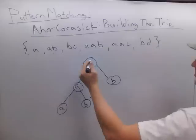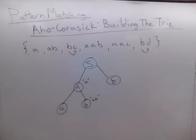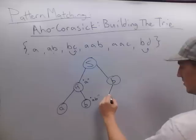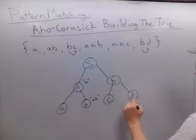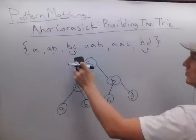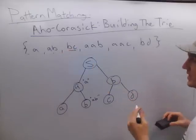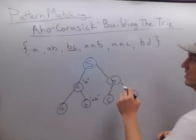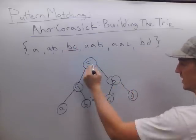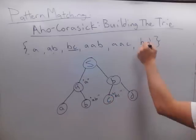I'm going to do the same with B. B can be followed by C or it can be followed by D, so I'm going to add those children. I have to set the special output characteristic for each of these. BC terminates an entire word from the dictionary, so this node is going to have output BC. And this node is going to have output BD.